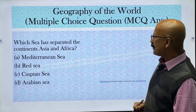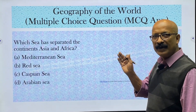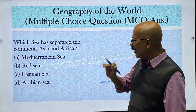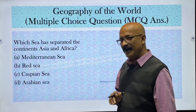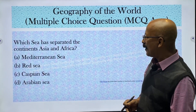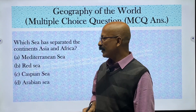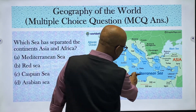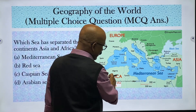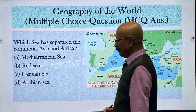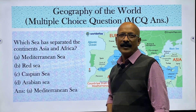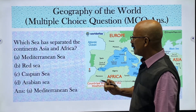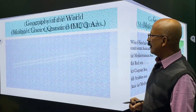Which sea has separated the continents of Asia and Africa? There is a physical boundary between Asia and Africa — it may be Mediterranean Sea or Arabian Sea. Among the four options, the correct answer is Mediterranean Sea. You can see on the map: this is Asia, this is Africa, and Mediterranean Sea is in between. So Mediterranean Sea has divided or separated Asia and Africa physically.